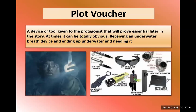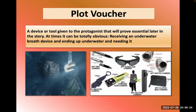Plot voucher: whenever a protagonist is given a tool or device in a film, it's going to show up later to be essential. This is part of Chekhov's gun. In Lord of the Rings, at one point a character gets a magical glass that lights up — later that becomes essential. The easiest example is James Bond: early in the film he always gets some fantastic device, like being able to breathe underwater. Later in the film, he's going to need that device. Otherwise, why show it?